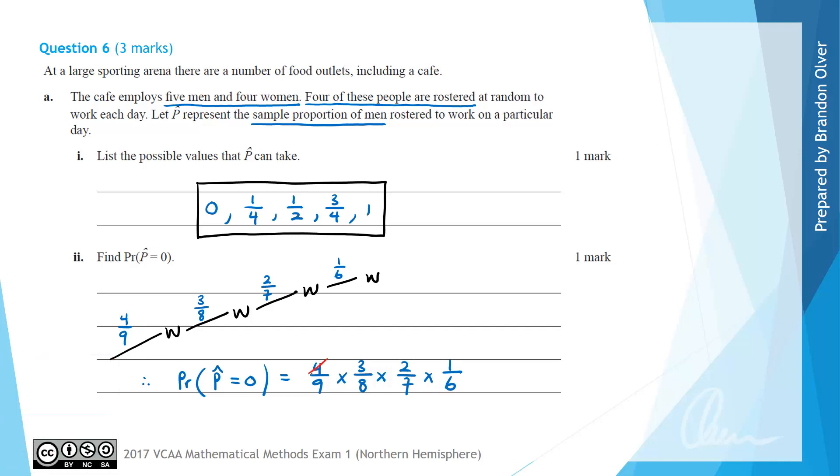We can cancel this four with part of the eight, leaving behind a two there, and we can cancel this three times two, which is six, with that factor of six in the denominator. Multiplying out the top line we've got one times one times one times one is one, and then we have nine times two times seven, which is nine times fourteen. That's going to be one over, and nine times fourteen is 126. So that is the answer to part two of part A.